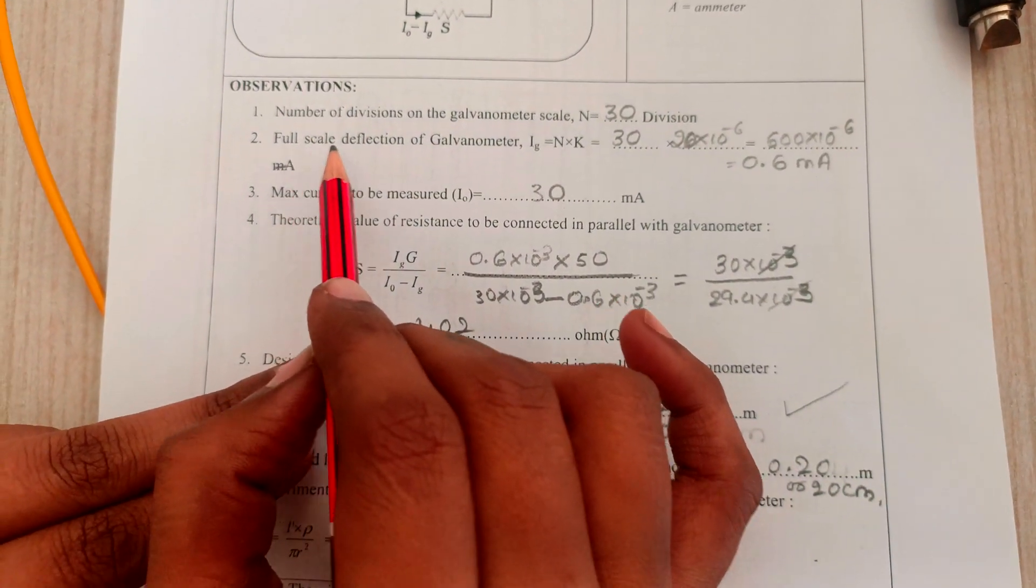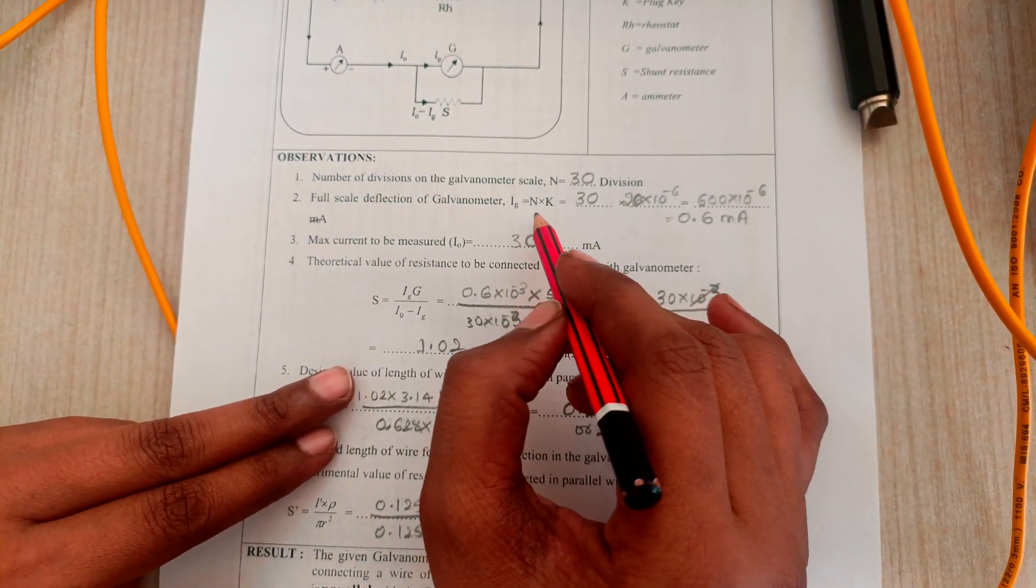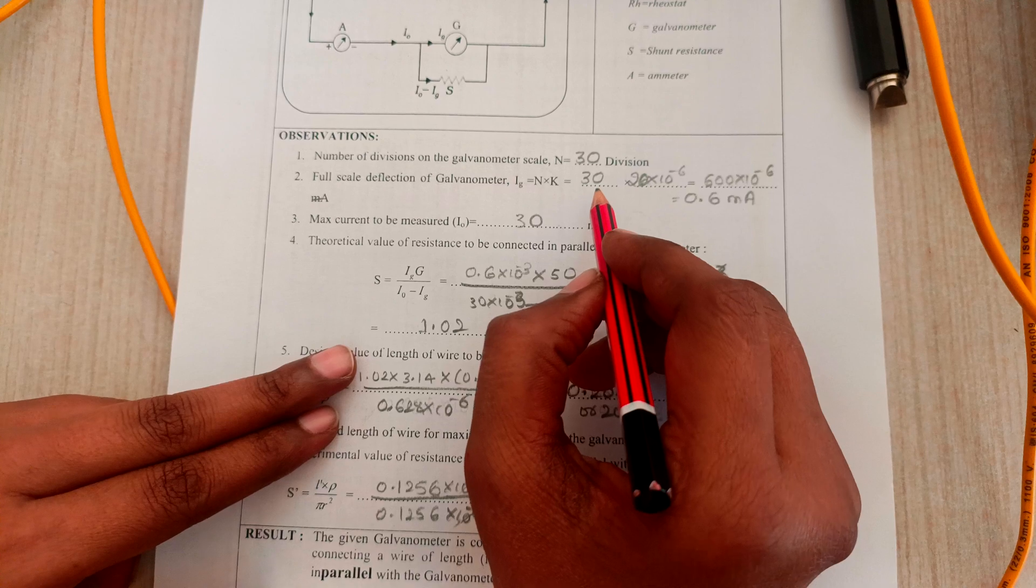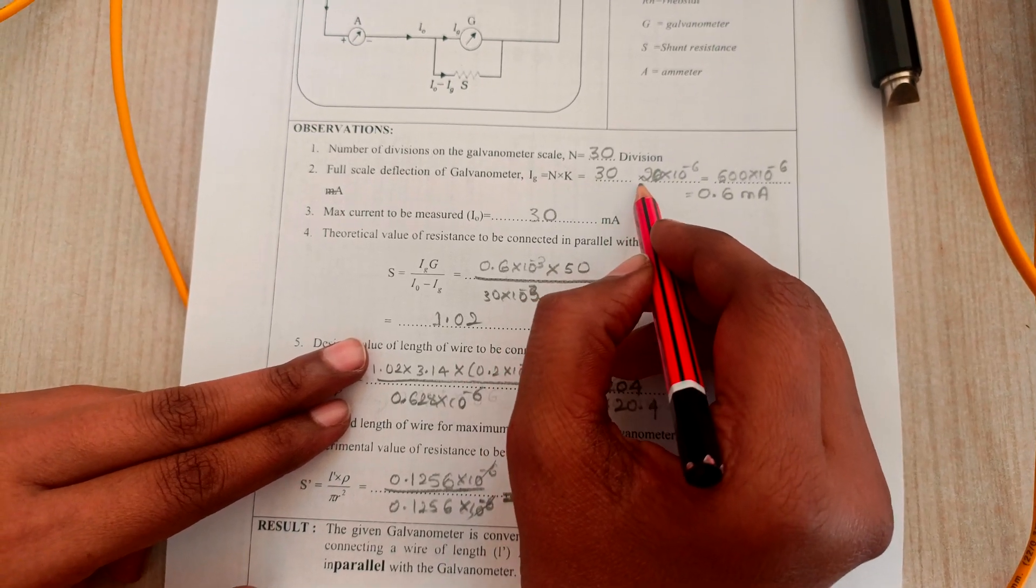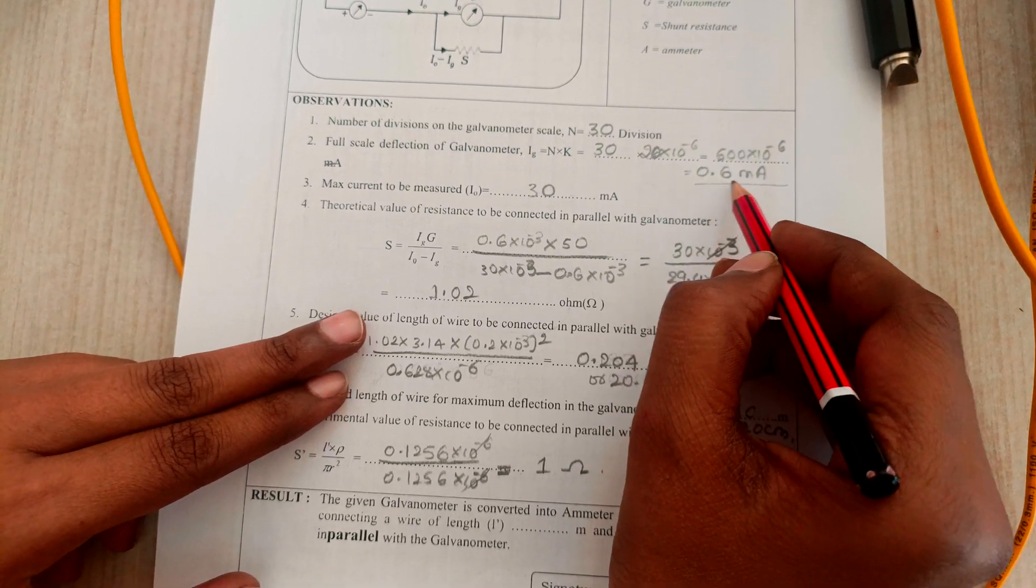For full scale deflection of the galvanometer, the current is calculated using the formula n × k. Here is the calculation: 30 × 10^-6, so we are getting the current as 0.6 milliamps.